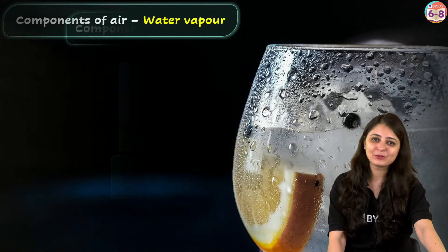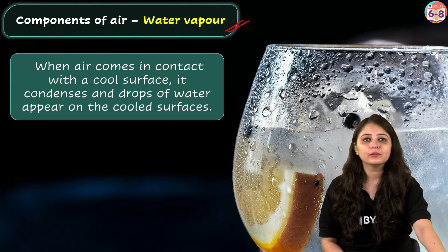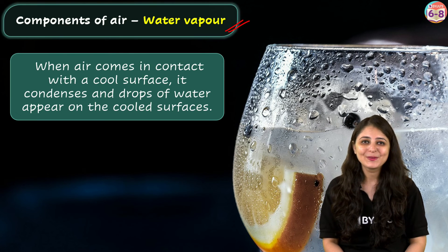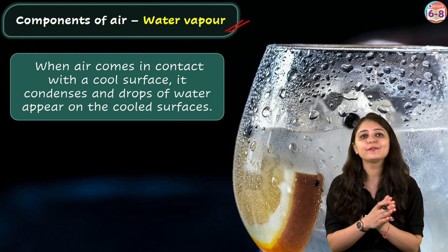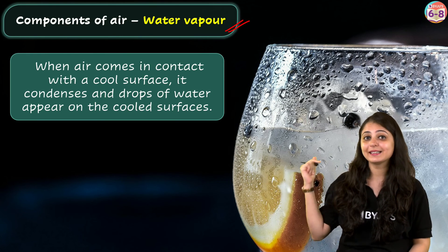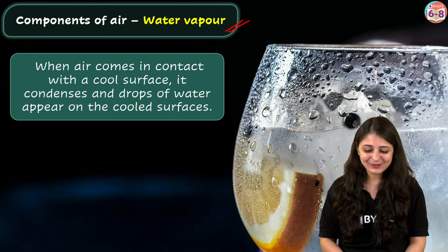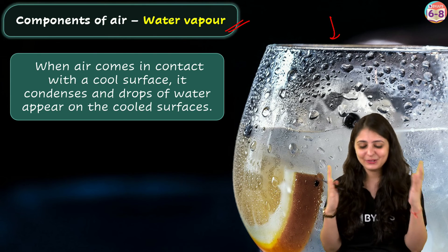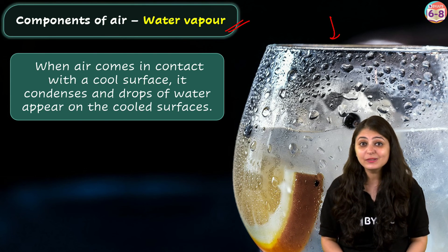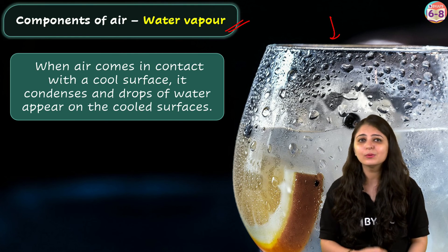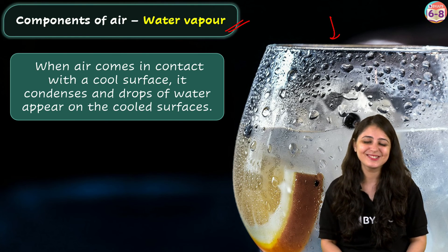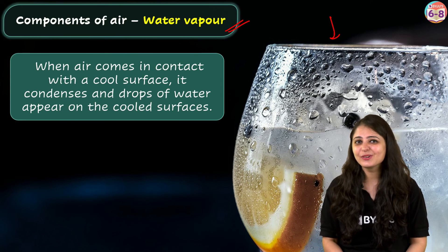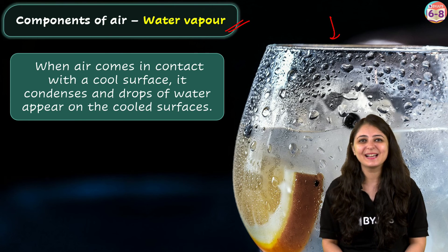The next important component is water vapor — the gaseous form of water. When air comes in contact with a cool surface, it condenses and drops of water appear on the cool surface, as you can see here. Can you guess what this process is called? Do let me know in the comment section right after this session. And don't forget to hit the like and subscribe button as well.